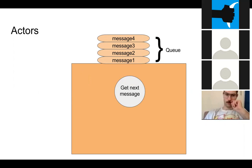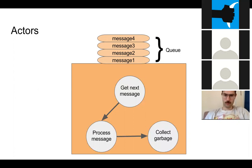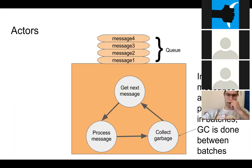An actor's lifecycle: first it gets the next message on the queue, then it takes and processes that message. In processing, it may send messages to other actors or update its own internal state. Once done, it does garbage collection — specifically in Pony, garbage collection only happens between processing messages. Once garbage is collected, it gets the next message. In reality, messages are processed in batches so we don't overdo garbage collection. There's a batch size in the Pony source code that controls how many messages are processed before the next round of GC.